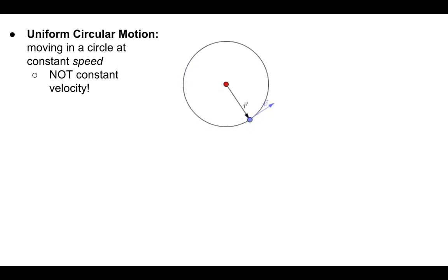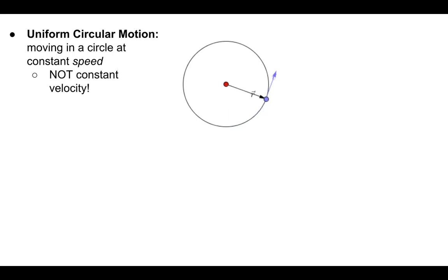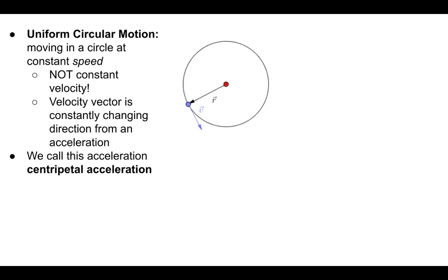Now how does velocity change? The definition of acceleration is a change in velocity. In this case, the acceleration is changing the direction of velocity but not the actual magnitude, because this object is moving in a circle at a constant speed. So the velocity vector is constantly changing direction due to an acceleration — we call this the centripetal acceleration.